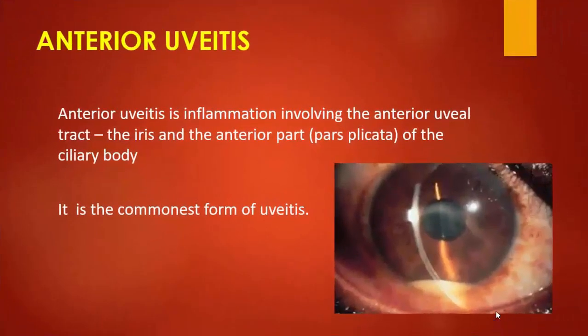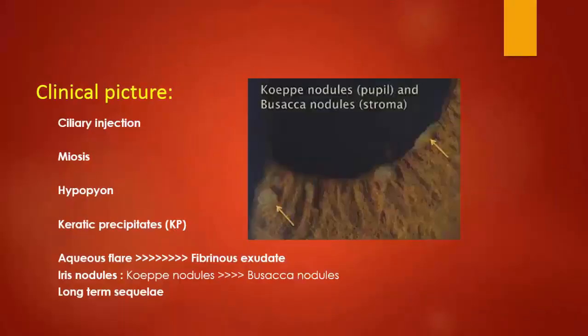Anterior uveitis is inflammation involving the anterior uveal tract, including the iris and the anterior part of the ciliary body, which is called pars plana. It is the most common form of uveitis. Clinical features of anterior uveitis include ciliary injection, miosis, hypopyon, keratic precipitates, aqueous flare which may contain fibrinous exudate, and iris nodules.